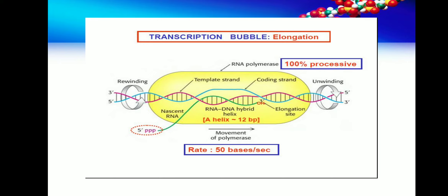That is about the elongation of transcription. Every RNA polymerase will add about 50 nucleotides per second. So the processivity of RNA polymerase is 50 bases per second — in one second, 50 bases will be added.